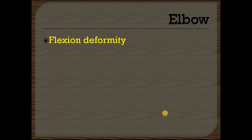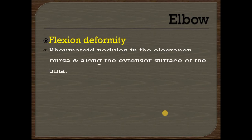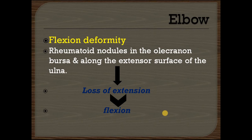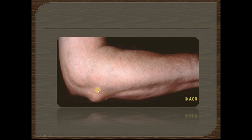Deformities of the elbow: flexion deformity commonly occurs. This deformity occurs due to rheumatoid nodules present in the olecranon bursa and along the extensor surface of the ulna. Due to the presence of rheumatoid nodules on the extensor surface, there is a loss of extension which leads to flexion deformity of the elbow, as seen in the picture.